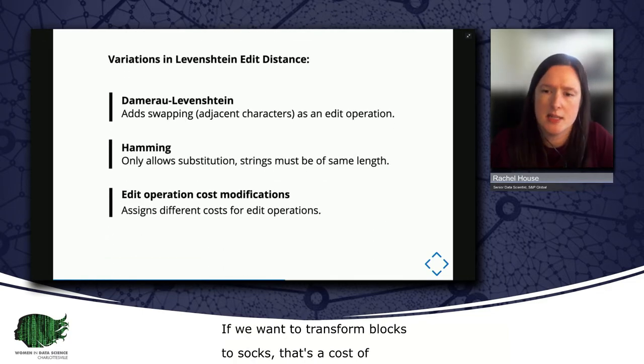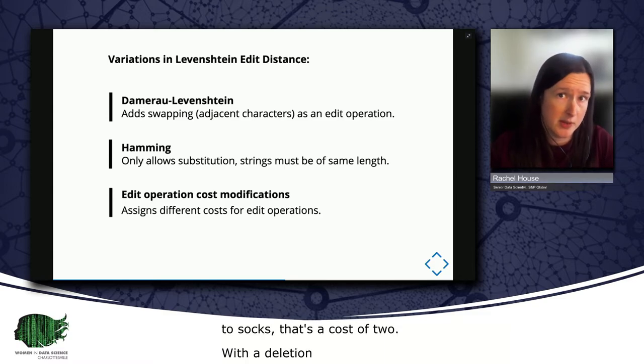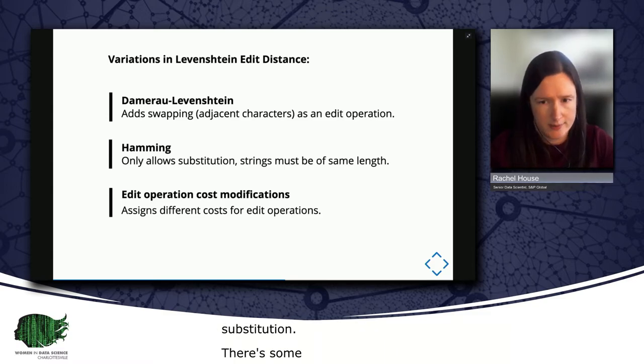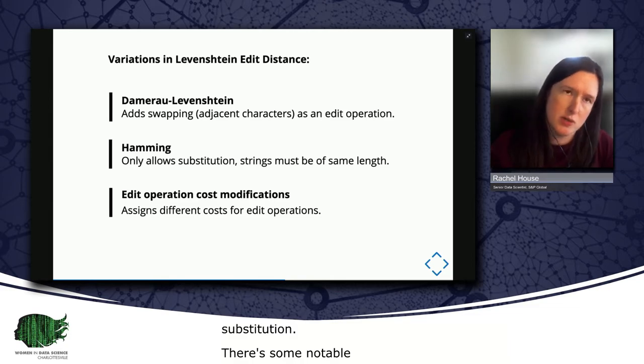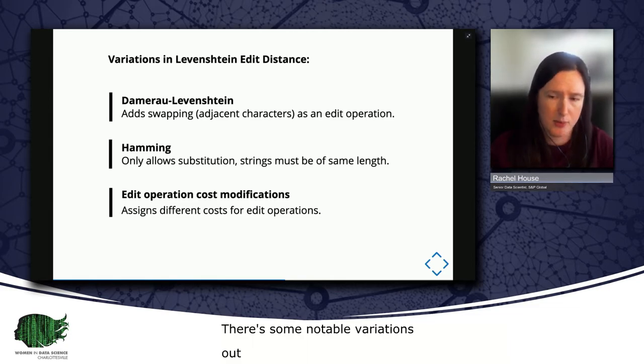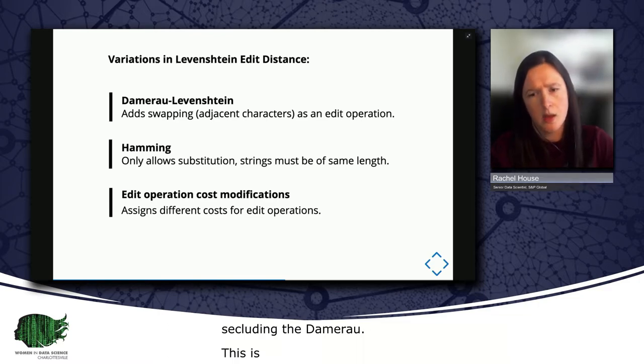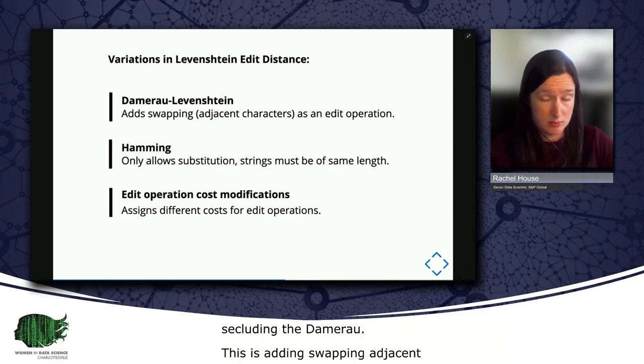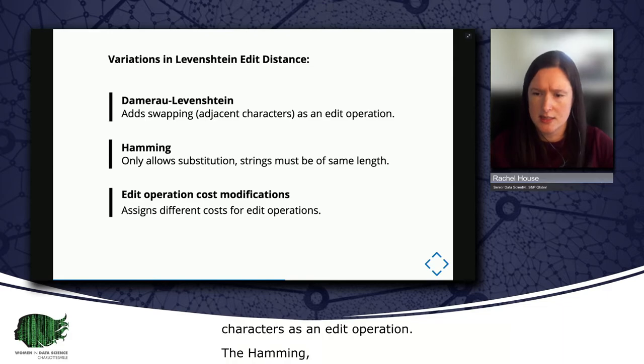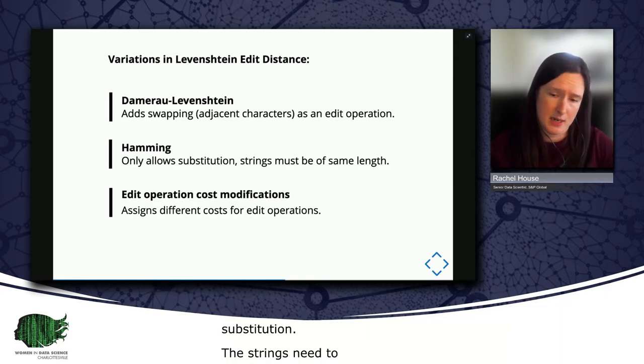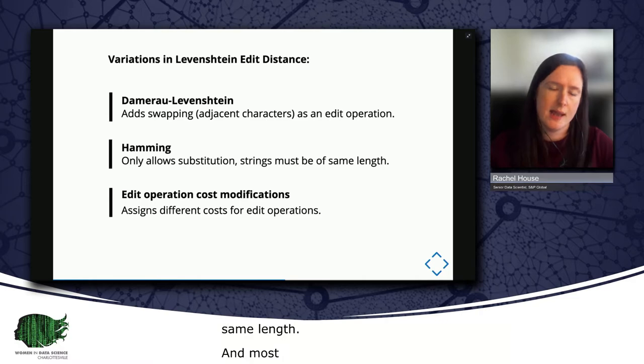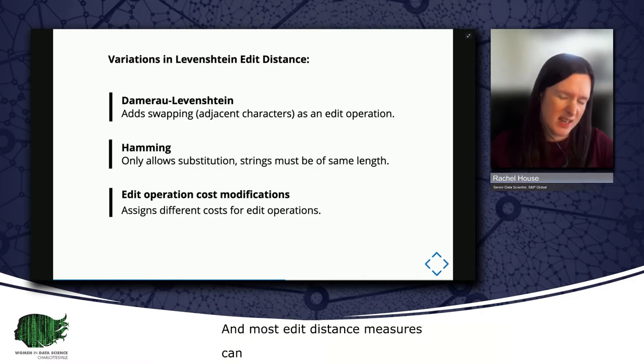There are some notable variations in Levenshtein edit distance out there that you might see, including the Damerau-Levenshtein, which adds swapping two adjacent characters as an edit operation. And this is a great comparison when you need to accommodate common data entry typos of transposed characters. The Hamming distance is another variation, which only allows substitution. So if you're using it, your strings need to be of the same length. And more generally, most edit distance measures can introduce cost modifications, which allow you to individually weight edit operations if you don't want them all to have that default cost of one.